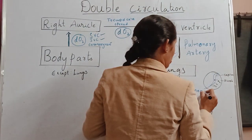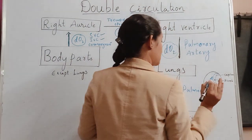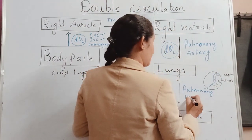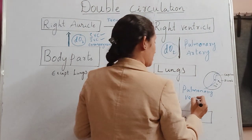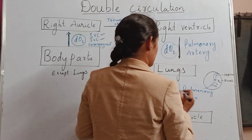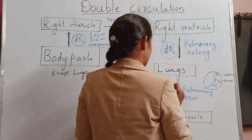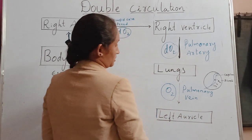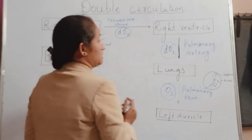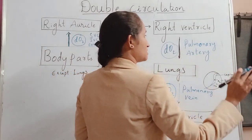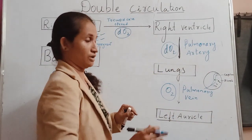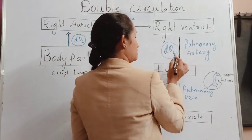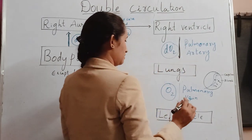All veins carry deoxygenated blood, but only the pulmonary vein carries oxygenated blood from the lungs. Similarly, all arteries carry oxygenated blood, but only the pulmonary artery carries deoxygenated blood.